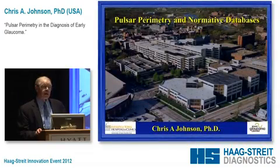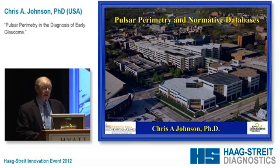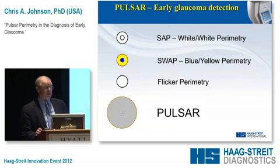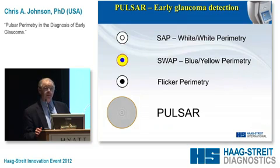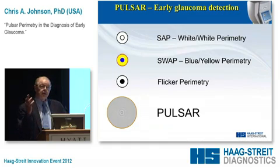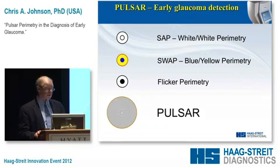What I'd like to do is talk about Pulsar Perimetry, which is a new procedure available on the Octopus 600. There have been a number of different tests I've been involved in—standard white-on-white perimetry, short-wavelength perimetry, and flicker perimetry. Pulsar Perimetry is a new type of procedure that has spatial and temporal characteristics that cause a flickering type of target, as you can see on the slide here.